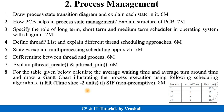In the process management unit, the most important part is the numericals — these are compulsorily asked in your exam. You have to calculate average waiting time and average turnaround time and draw the Gantt chart using scheduling algorithms RR and SJF, as per the given process table. This question will be asked for 8 to 10 marks and is a compulsory question.